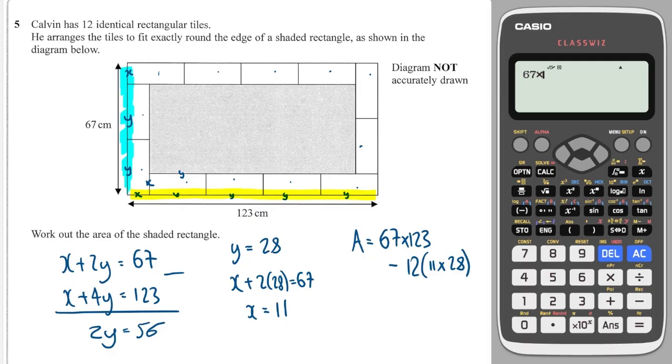So I'll do 67 times 123, and then I would subtract 12 times 11 times 28. And I would get the shaded area is equal to 4545. And that would be centimeters squared.